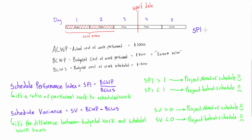So we'll have SPI equals BCWP, which is 800, over BCWS, which is 1200. This will give us a value of 0.67.